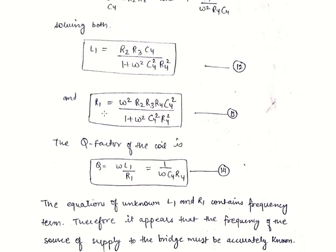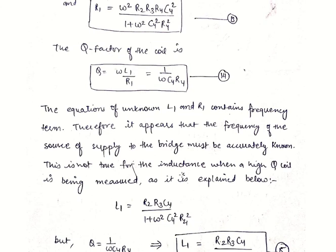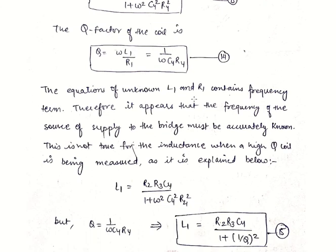The quality factor Q = ωL1 / R1. Dividing the two equations gives Q = ω·C4·R4... wait — more precisely, Q = 1/(ω·C4·R4) (from the ratio). The expressions for unknown L1 and R1 contain frequency terms, so it appears the frequency of the supply to the bridge must be accurately known. However, this is not true when a high-Q coil is being measured.